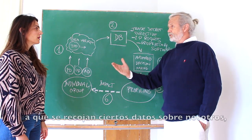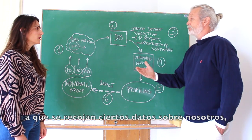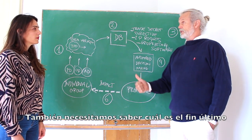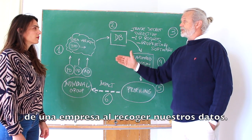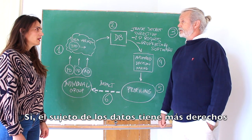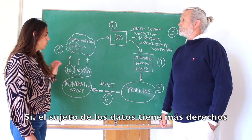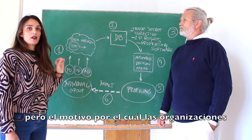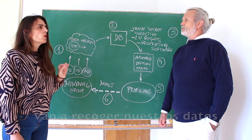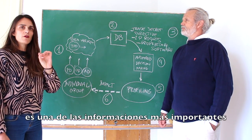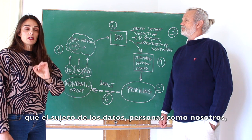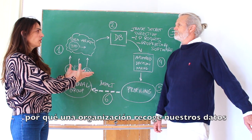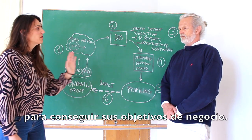Whether you can say no thank you, I don't want you to collect this data, I don't want you to process this data. And also you need to know what the purpose is — what is the company or organization going to use this data for. These are the three main things. Well there are more rights that the data subject has, but the purpose, the reason why they are going to take your data, is one of the most important things that a data subject — a person like you or like us — has to know. It is why a company is collecting your data to achieve their business goal.